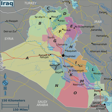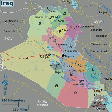Iraq has a coastline measuring 58 km on the northern Persian Gulf, further north but below the main headwaters only. The country easily encompasses the Mesopotamian alluvial plain. Two major rivers, the Tigris and Euphrates, run south through Iraq and into the Shatt al-Arab, thence the Persian Gulf.